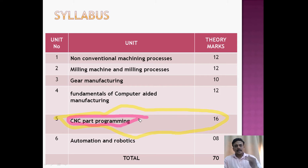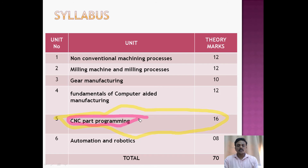So chapter by chapter: the first is non-conventional machining processes, second is milling, third is gear manufacturing, fourth is fundamentals of CAM, fifth is CNC part programming, and sixth is automation and robotics. After this overview, let's start our first chapter on non-conventional machining processes.